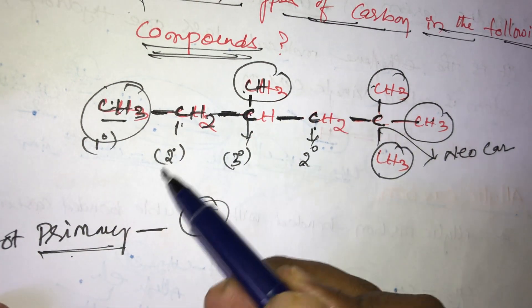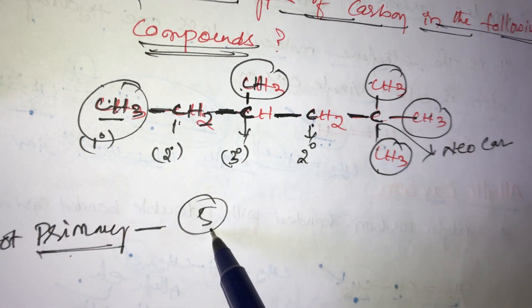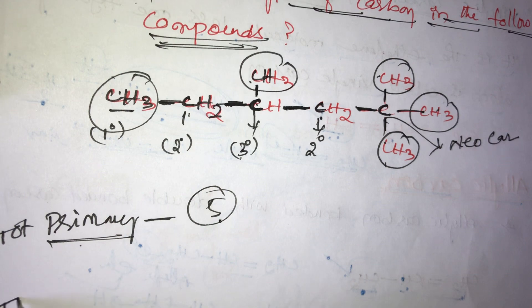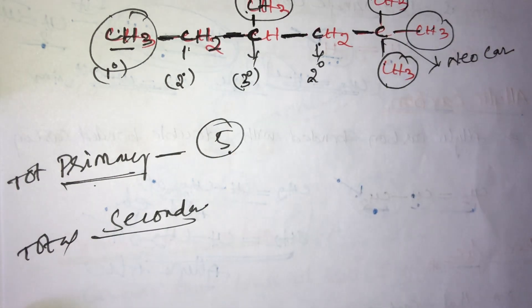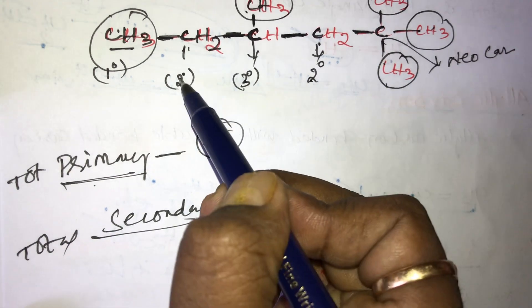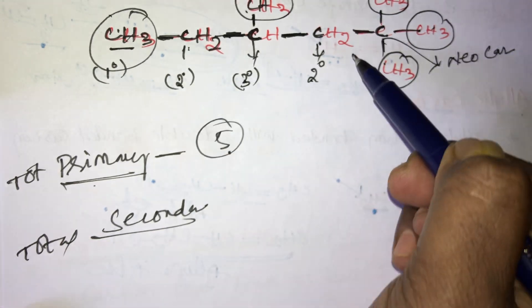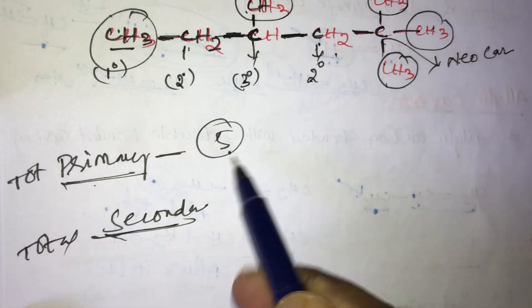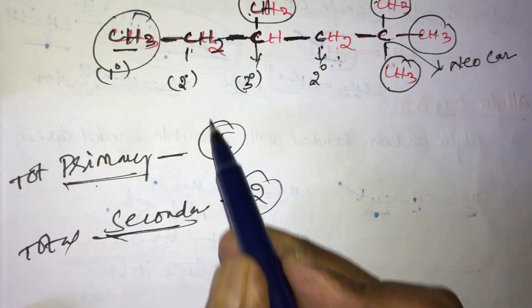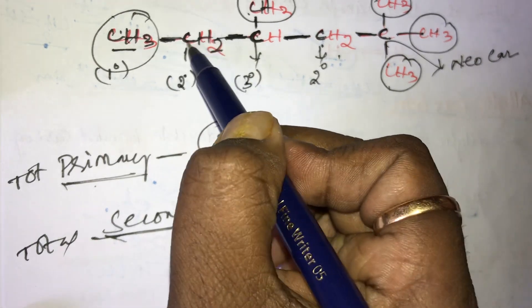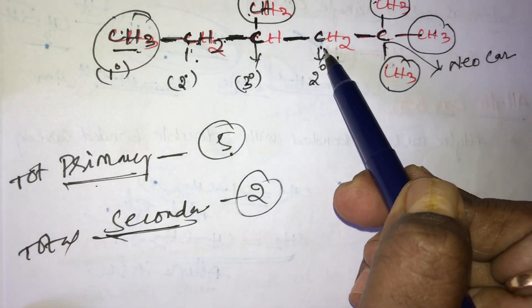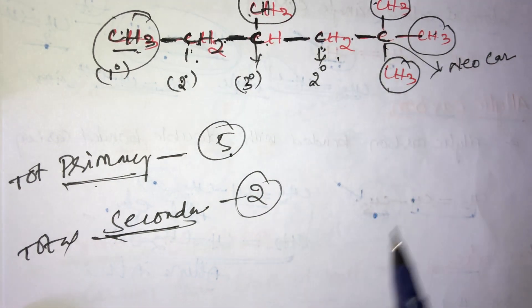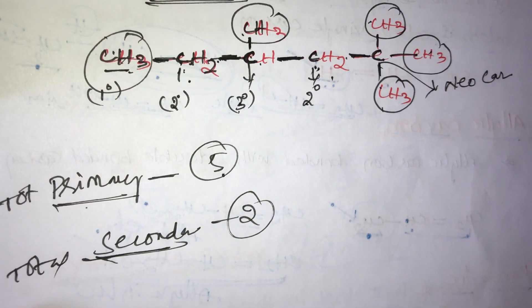In this compound, how many secondary carbons are there? Only this one and this one — total secondary carbons are only two. This carbon is bonded with the left side and right side, so it is called a secondary carbon. Here also one secondary carbon with left side and right side.